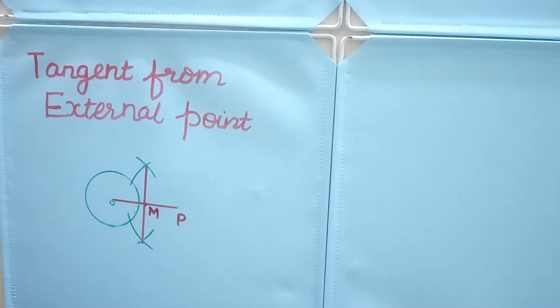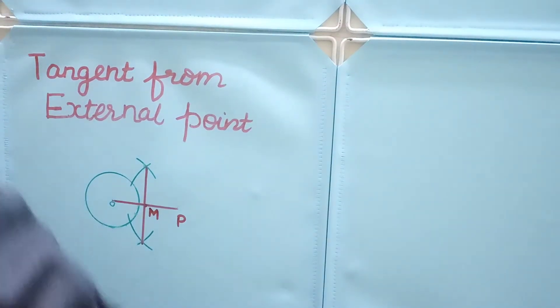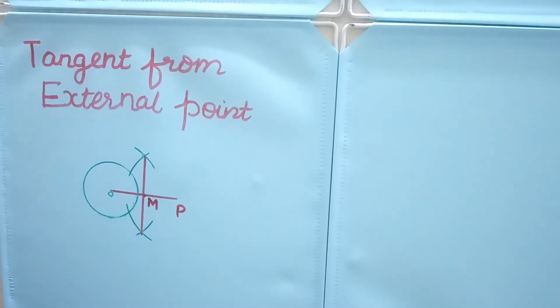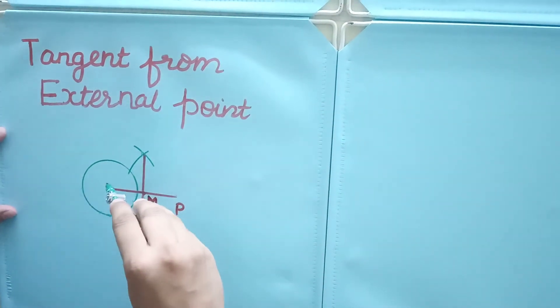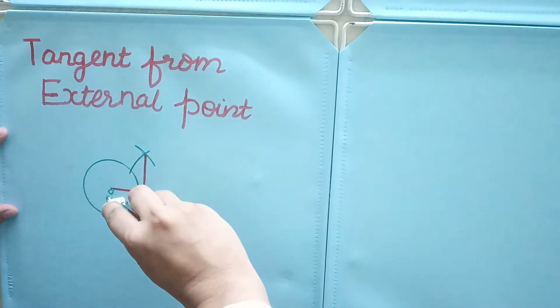Now after getting point M, take the radius equal to OM. Keep your compass on M and take the radius equal to OM.